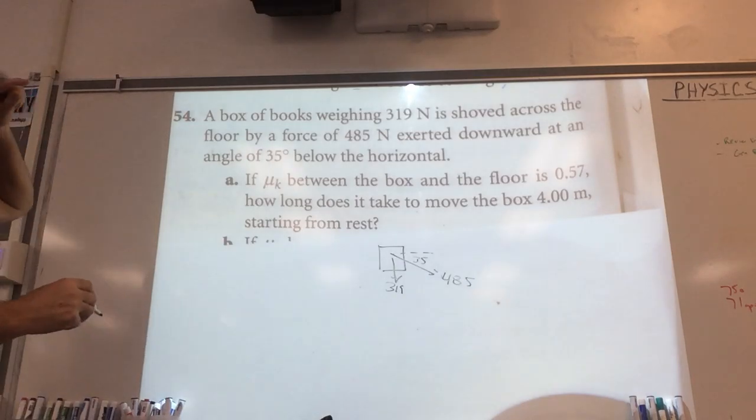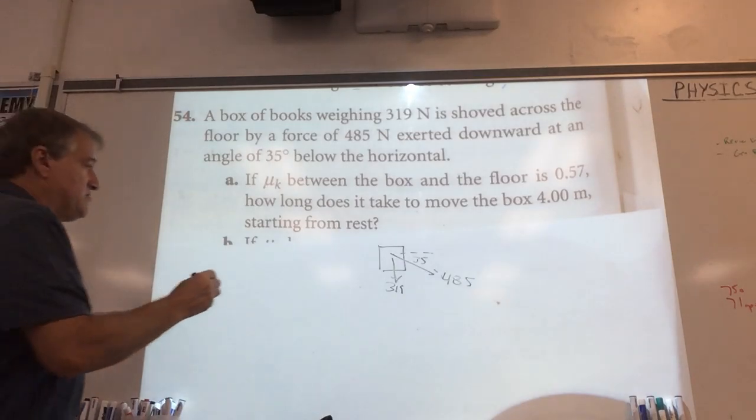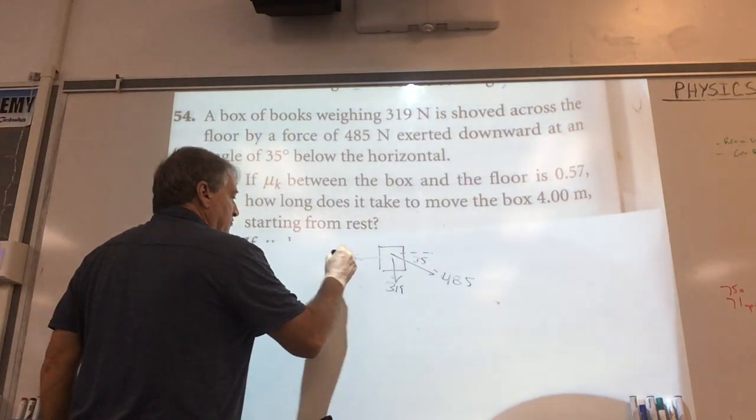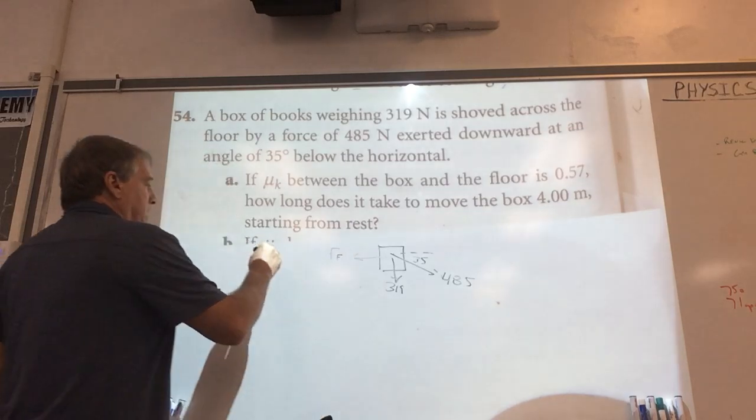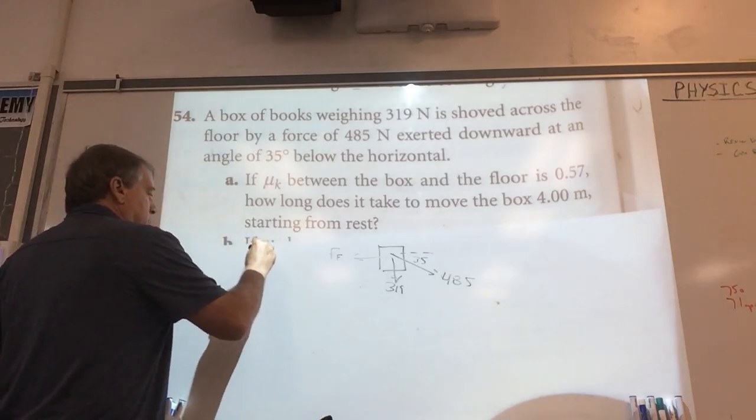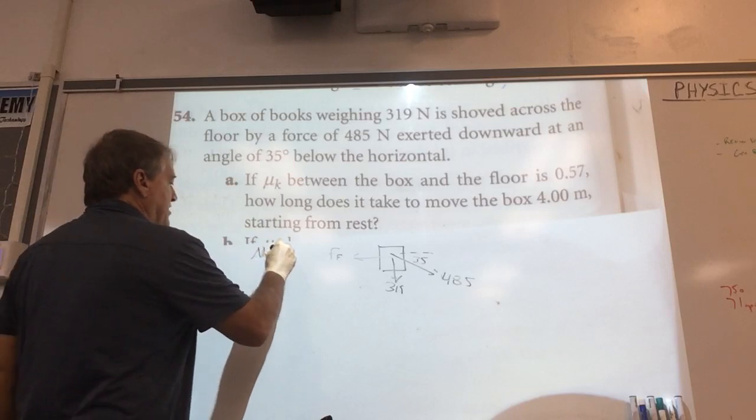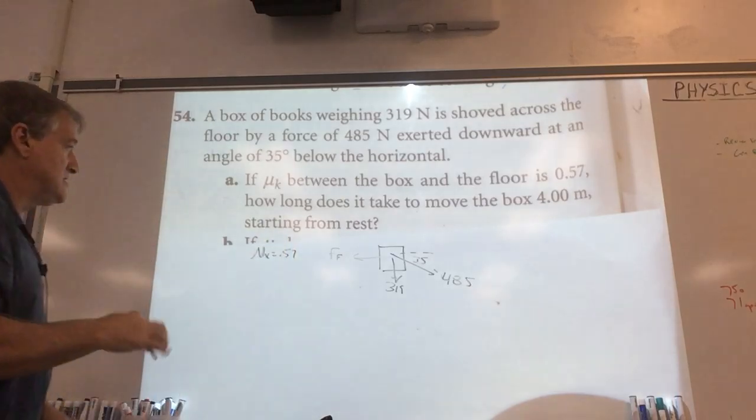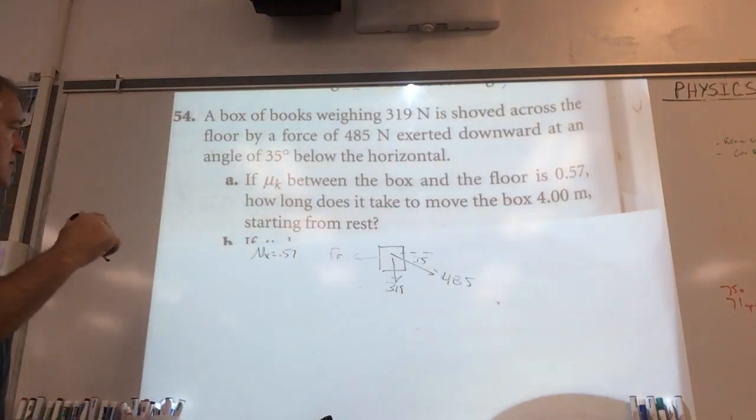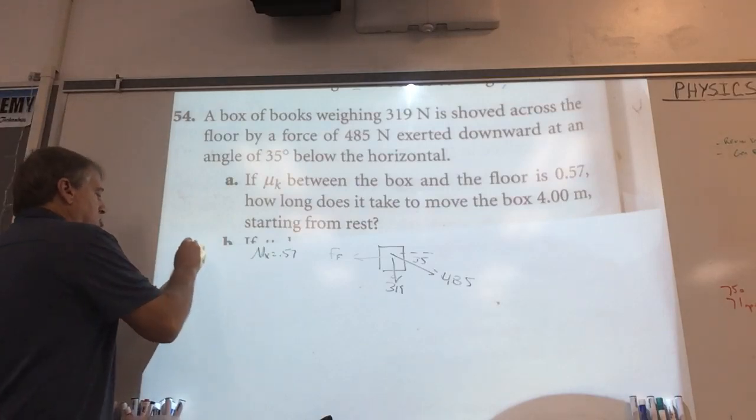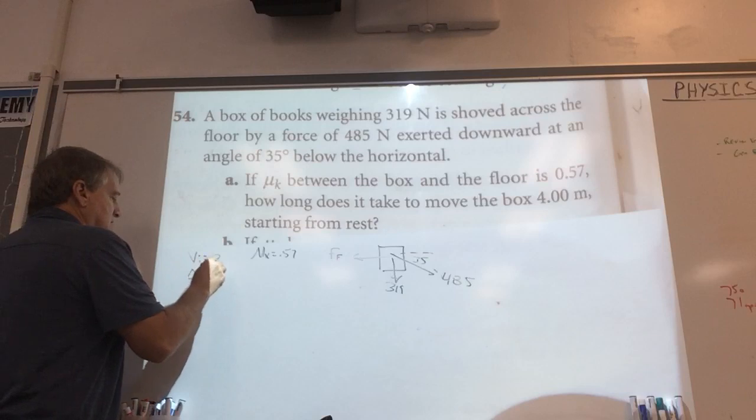We know that the weight of the books is 319 Newtons. Now, it also tells us that the mu sub k is 0.57. So I know I have a frictional force here. And let's just write the mu down. The mu sub k is 0.57. And the question is, how long does it take to move the books 4 meters starting from rest? So I know my vi is 0. I know my delta x is 4.